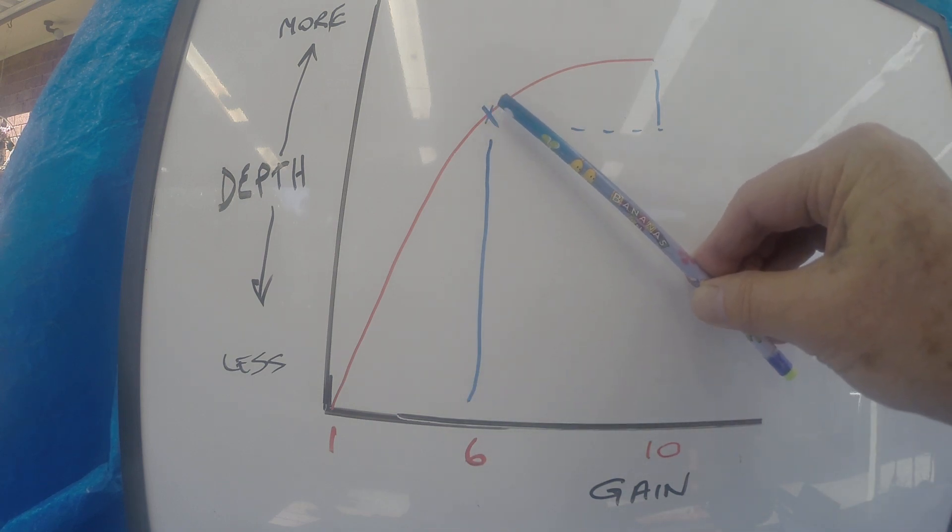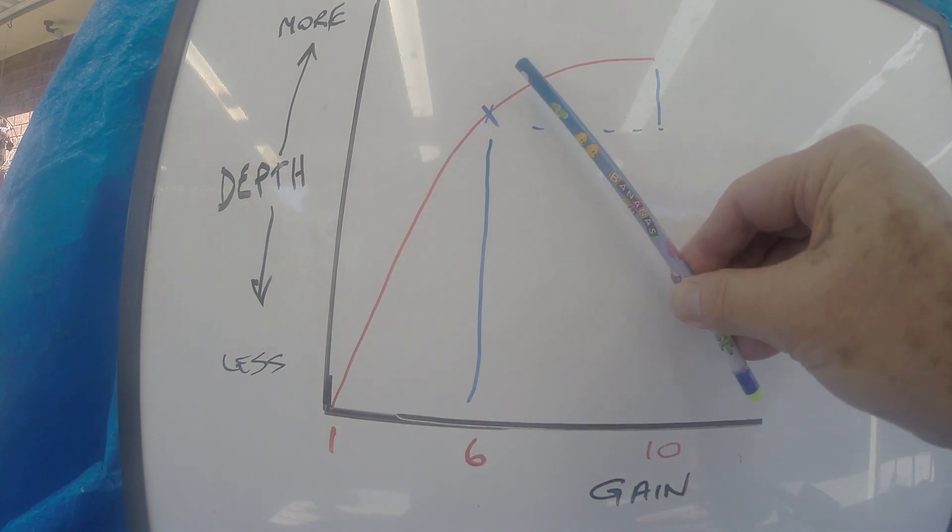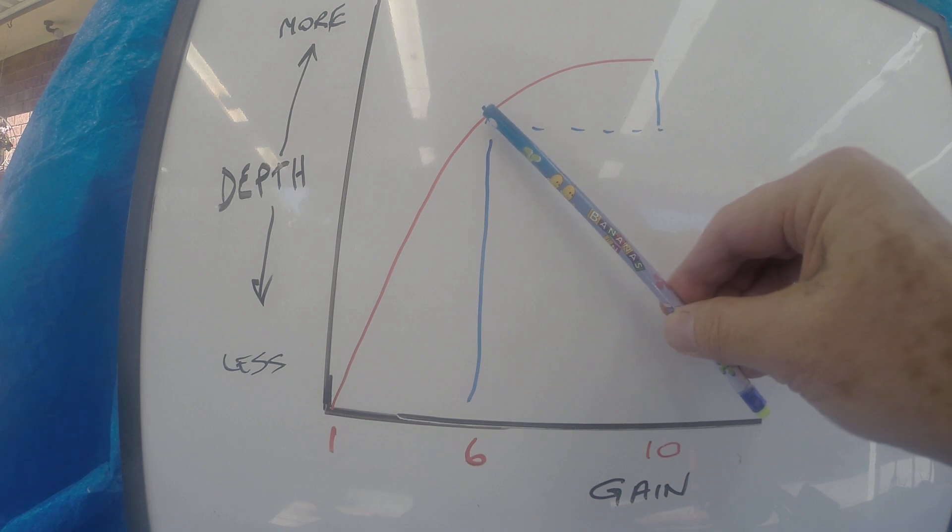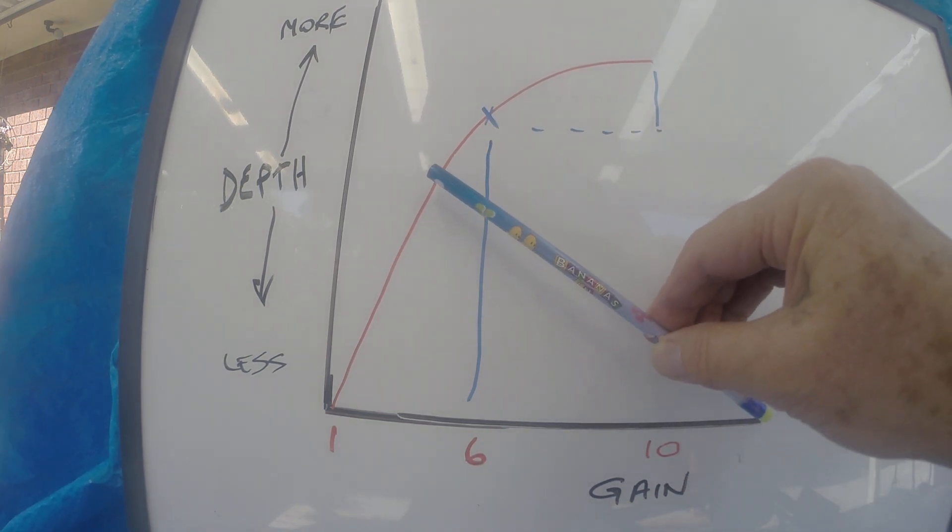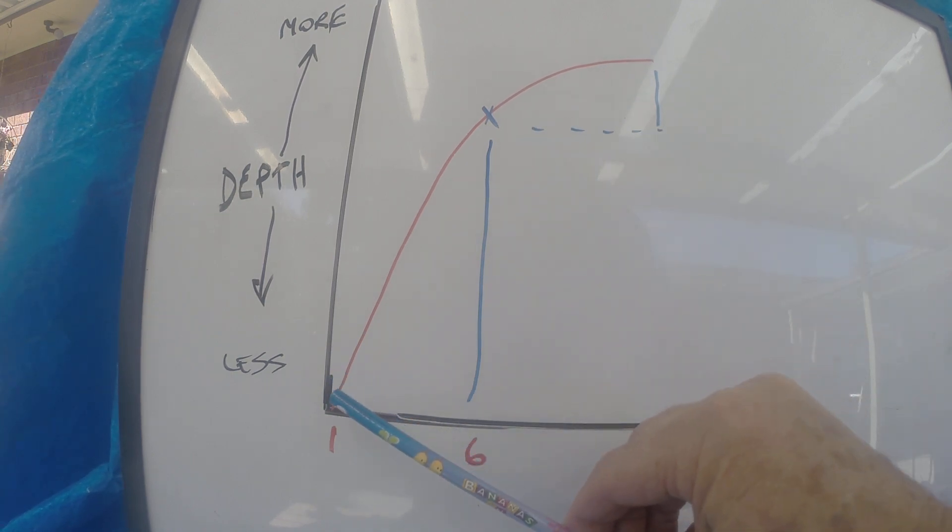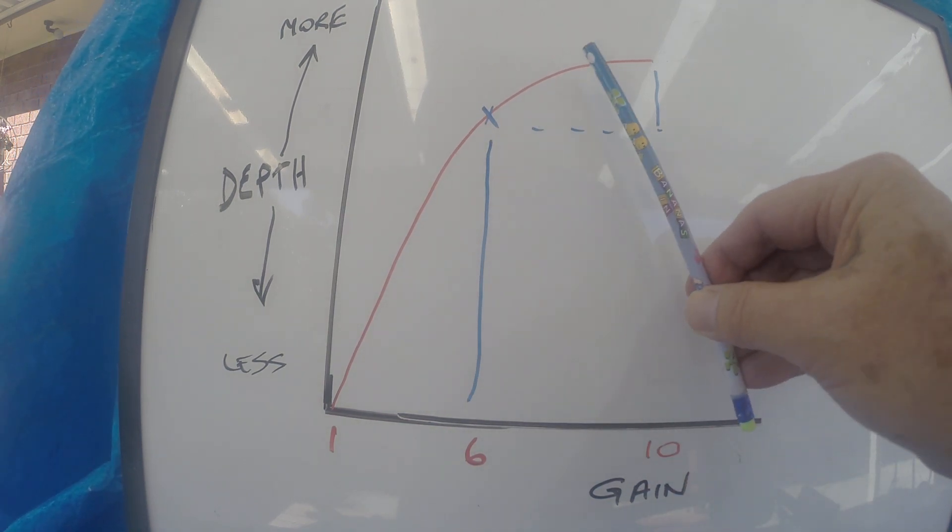Between 6 and 10, in terms of depth that is I'm talking about, not as much. So from 6 to 10 is obviously 4, and there's not much change in depth between 6 and 10. But here, between 1 and 4, huge increase in depth.